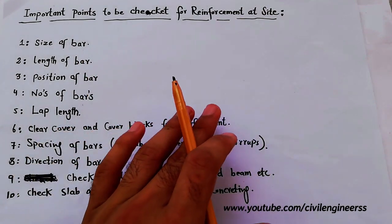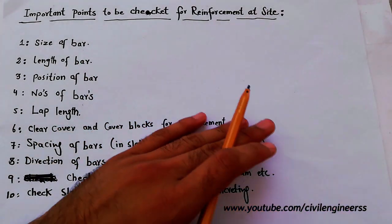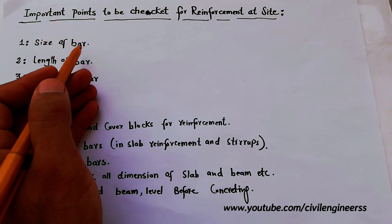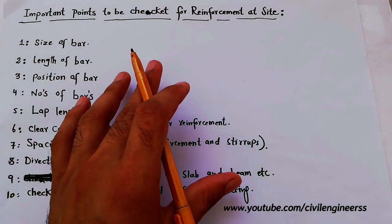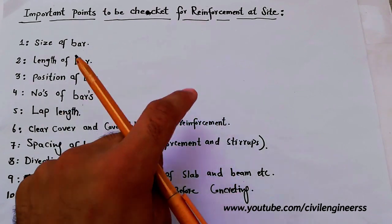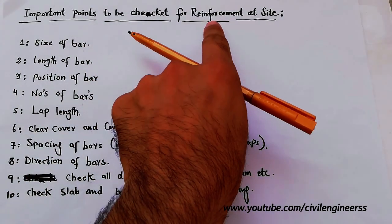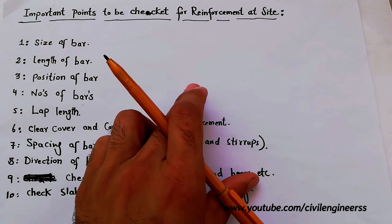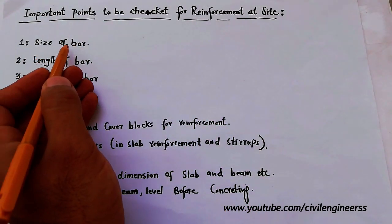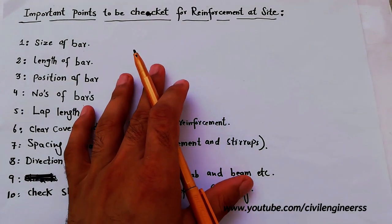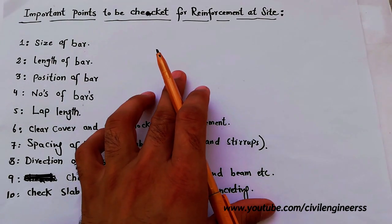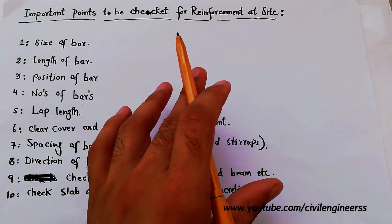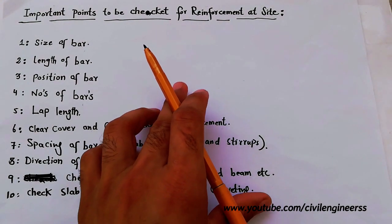Before placing reinforcement on slab, you have to check the size of bar — is the size of bar okay as per the drawing for reinforcement or not? Without the drawing you should not check. You have to keep the drawing with yourself for checking reinforcement at site, and verify that the diameter of bar is correct.